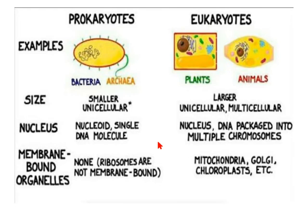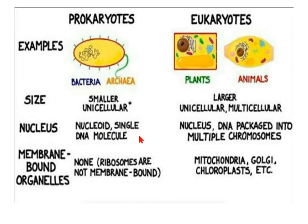Kingdom Monera organisms are basically prokaryotes. 'Pro' means before and 'karyote' means nucleus, so these are organisms found before the development of a true nucleus. They do not have a true nucleus and are smaller unicellular organisms. Examples include bacteria and archaea, and instead of a nucleus they have a nucleoid with a single DNA molecule.